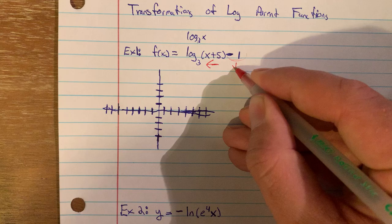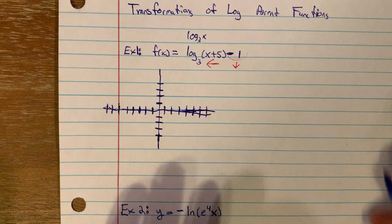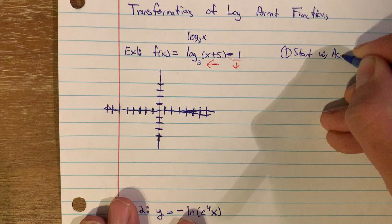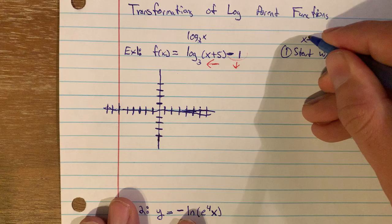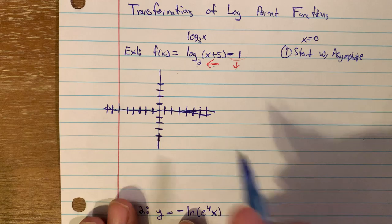Now let's get into transformations. For the function y = log base 3 of (x + 5) minus 1, the parent function is log base 3 of x. Inside the log we're adding 5, which is a shift left by 5. Outside the log we're subtracting 1, which is a translation down by 1.